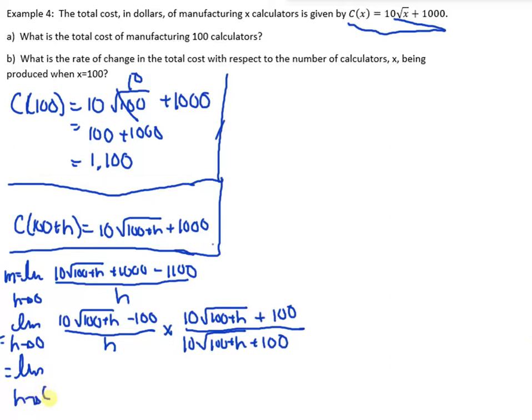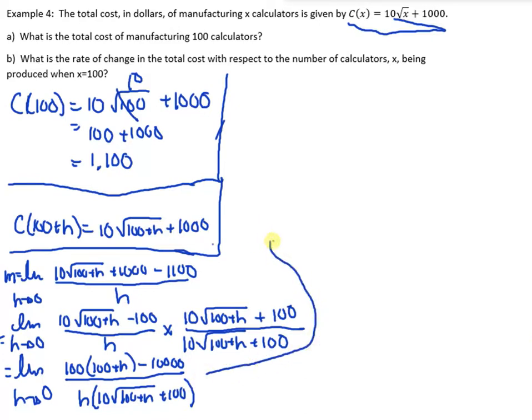The limit as h approaches 0. So, 10 times 10 is 100. And then, root 100 plus h times root 100 plus h is just 100 plus h. And then minus 100 times 100 is 1,000. And then, that's all over h, 10, root 100 plus h plus 100.